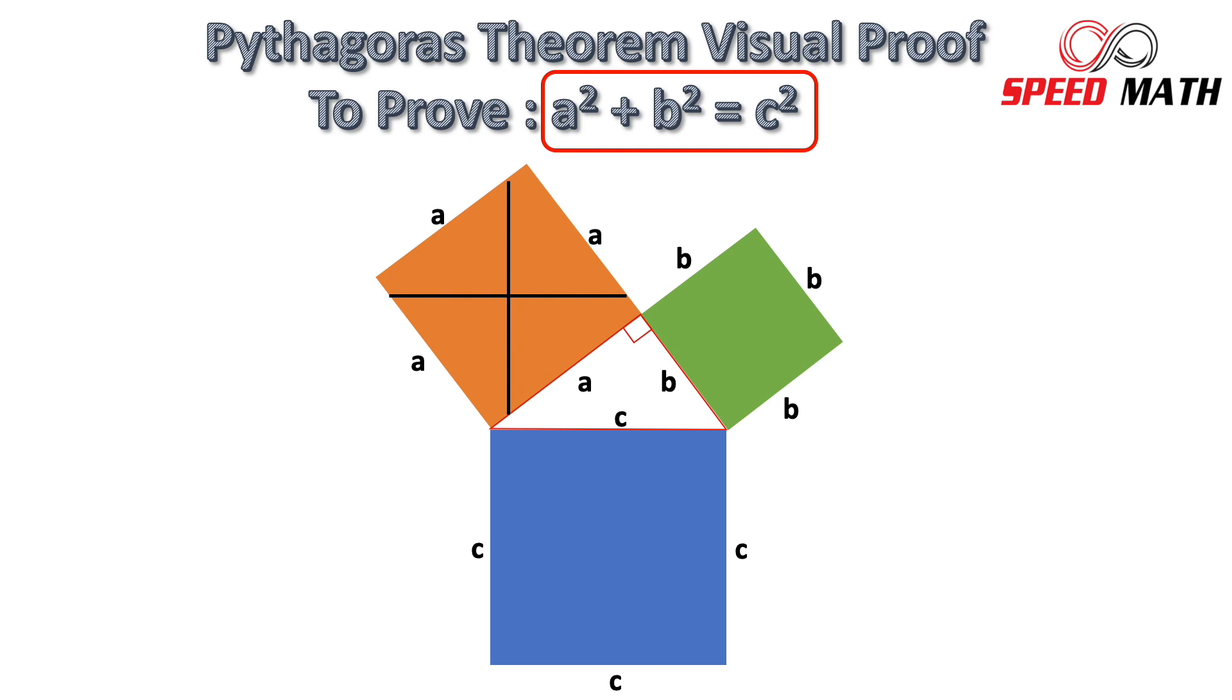You can see that the orange square is now divided into four parts. Let's color code each part. Now let's move each part into blue square with side C.